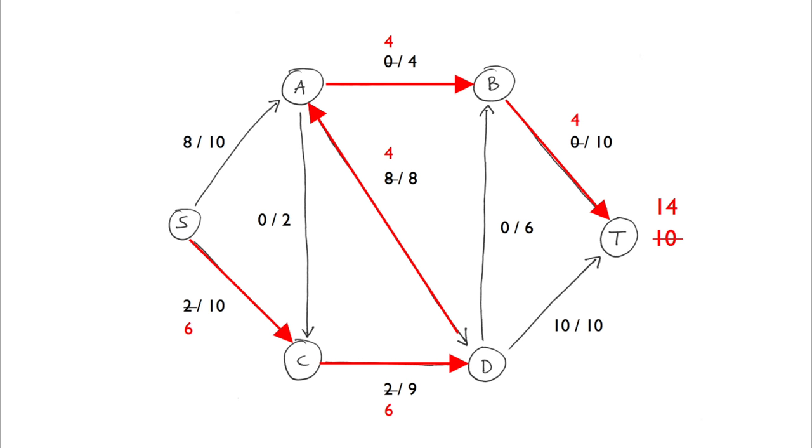In other words, while we add flow to our forward edges in the path, we take away flow from the backward edges.